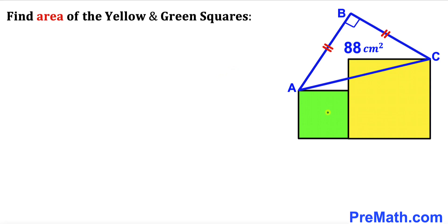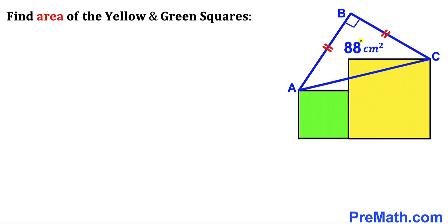Welcome to pre-math. In this video we have got green and yellow squares along with a blue right triangle ABC put together, as shown in the diagram. This blue triangle ABC is an isosceles triangle since side AB equals side BC. The area of the blue triangle is 88 cm², and our task is to calculate the combined area of the yellow and green squares.